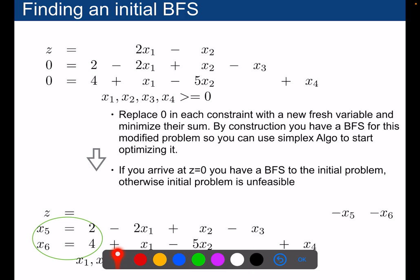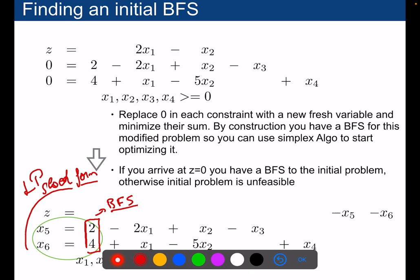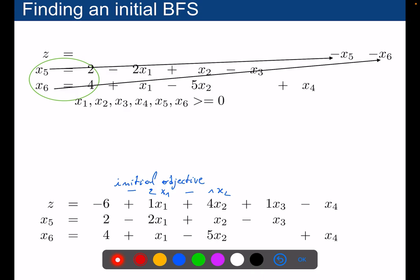What is interesting here is that this sub-problem is also a linear program, and by construction it is in a very nice slack form for which we already have a basic feasible solution. So we can start pivoting on that sub-problem, find a basic feasible solution for the initial problem, and then start pivoting on the initial problem. We just need to make sure to also substitute the expressions for x5 and x6 into the objective function.